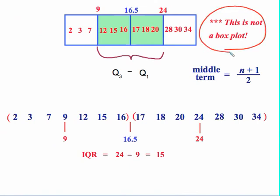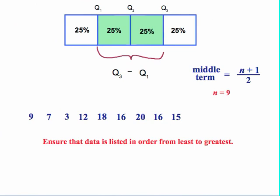Now notice that this is not a box plot. This is just a visual explanation, a visual representation of where our data falls in each of the quartiles. Let's do a second set of data.